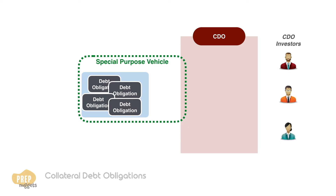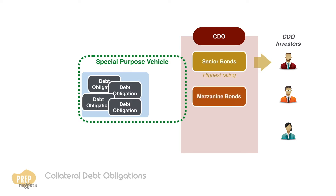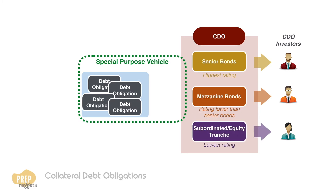CDOs usually issue three classes of bonds: senior bonds, which have the highest credit ratings; mezzanine bonds, with ratings lower than the senior bonds; and subordinated bonds, which are sometimes called the equity or residual tranche. It is called an equity tranche as it has characteristics more similar to those of equity investments than bond investments.